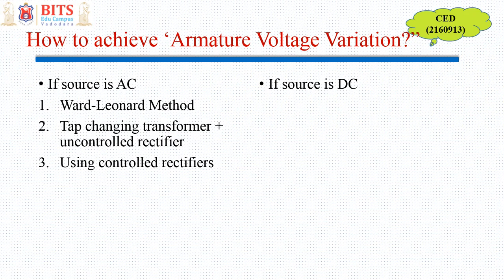Similarly, if the source is DC — generally a battery or solar supply — then we can use DC-to-DC converters or choppers for speed control. We are going to discuss each method in detail in subsequent sections.